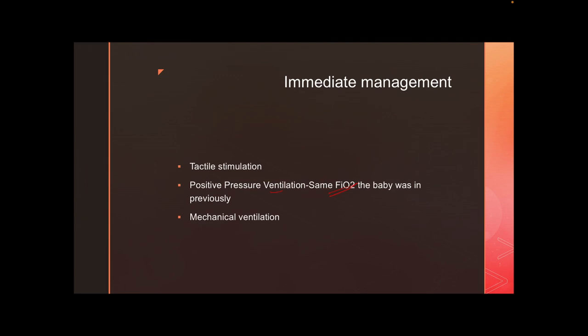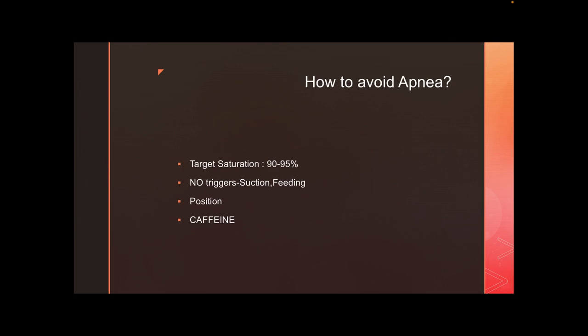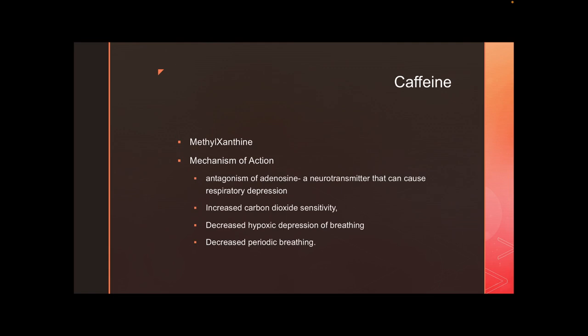If the baby is not responding to positive pressure ventilation and continues to be apneic, intubate and ventilate mechanically. To prevent apnea from occurring, maintain a target saturation of 90 to 95 percent — studies show 88 to 92 percent is adequate only for ROP but not for everything else. Ensure no triggers for apnea, position the baby properly with the neck not too flexed, and use caffeine.